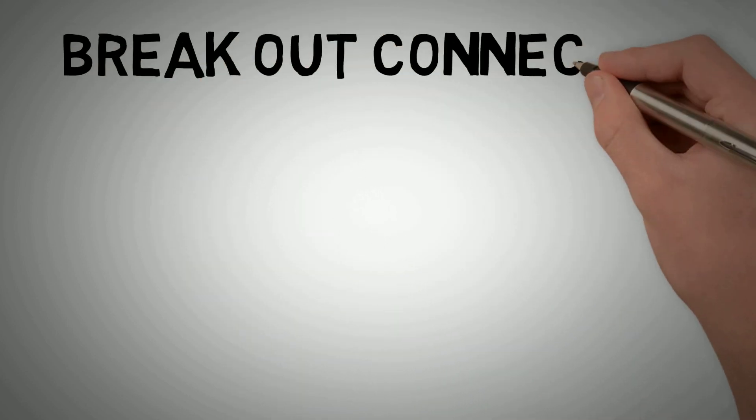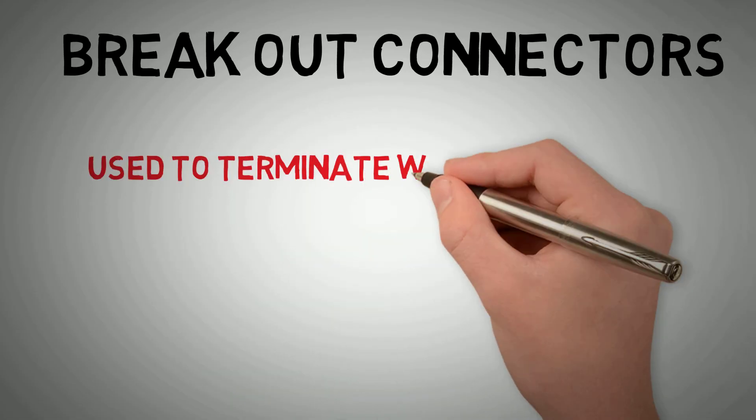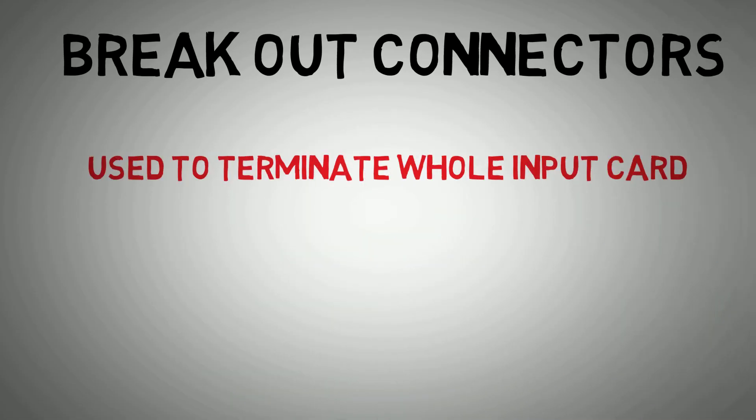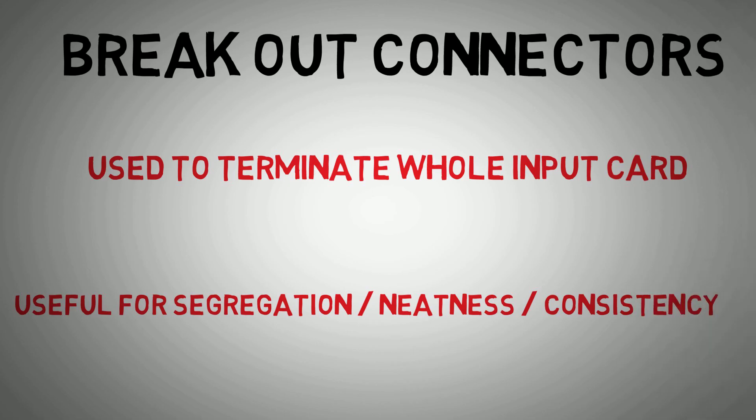In large systems, a common wiring configuration is via the use of breakout connectors. These allow a whole input card to have its termination points in an adjacent panel to the PLC inputs. This is used for segregation from PLC devices to field wiring.